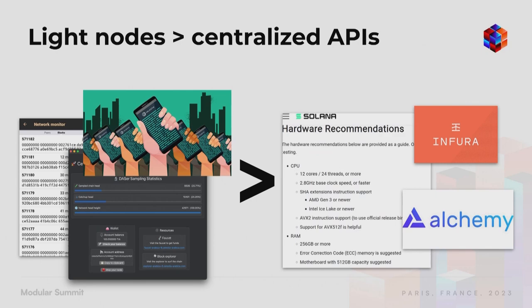If the main way users interact with Web3 is just through centralized APIs, that's not fundamentally different from Web2 — you're just interacting with a database. One of the things I appreciate about Bitcoin is that it has very good light client support. You can install a light client on your phone that connects directly to the Bitcoin network and gets data out without using any centralized API endpoints. That's why data availability sampling clients are important — to allow users to get back to the roots of Web3 and not have to rely on centralized middlemen and endpoints, which are prone to censorship and corruption.